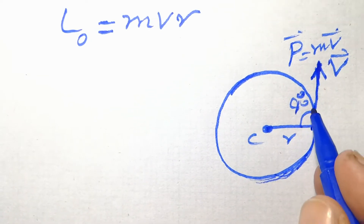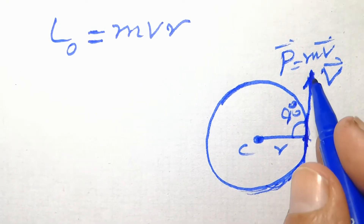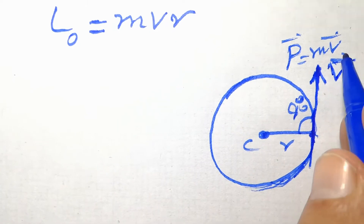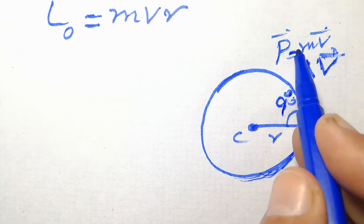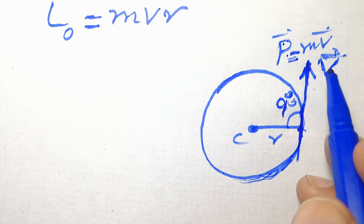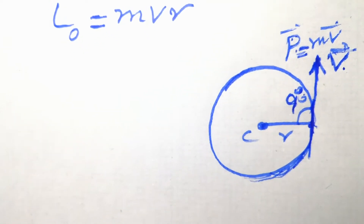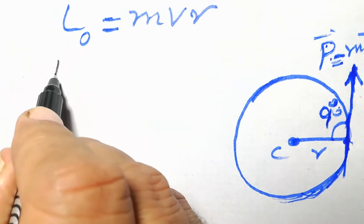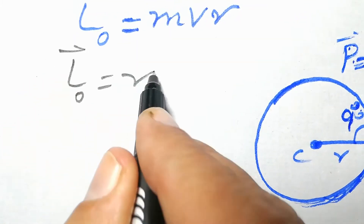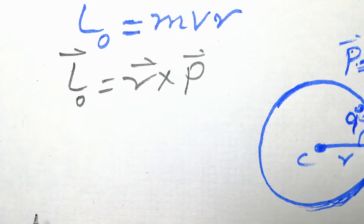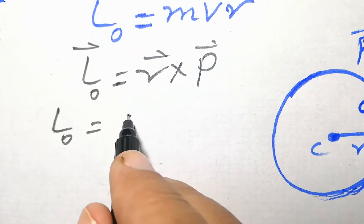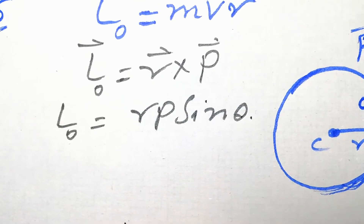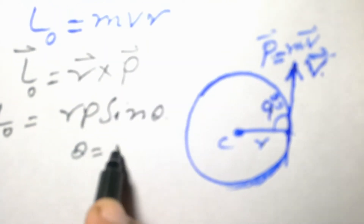The angle between R and V is 90 degrees. The direction of linear momentum is the same as that of the velocity. Now, according to the definition of angular momentum, orbital angular momentum L₀ is equal to R cross P. The magnitude of this orbital angular momentum will be equal to Rp sin θ, and the angle between linear momentum and R is 90 degrees.